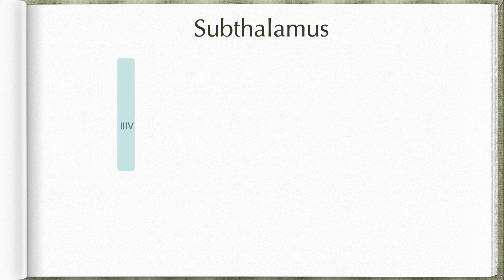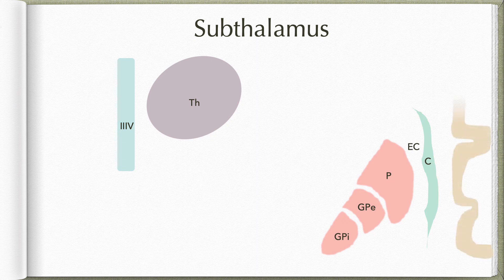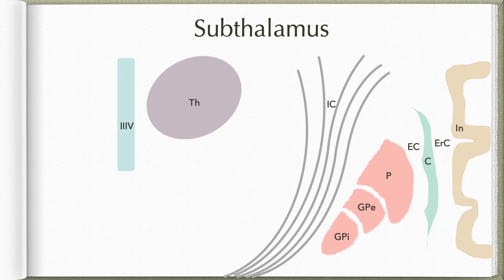Let us identify some anatomical landmarks. The cavity of the third ventricle is central; immediately lateral to that is the thalamus, particularly the ventral tier nuclei. Lateral to the thalamus is the lentiform nucleus, comprising the putamen, globus pallidus externum, and globus pallidus internum. Further lateral is the claustrum, separated from the lentiform nucleus by the external capsule, and the insular cortex separated from the claustrum by the extreme capsule. Medial to the lentiform nucleus lie the fibers of the internal capsule, and the area between the thalamus and the internal capsule is occupied by the structures of the subthalamus.